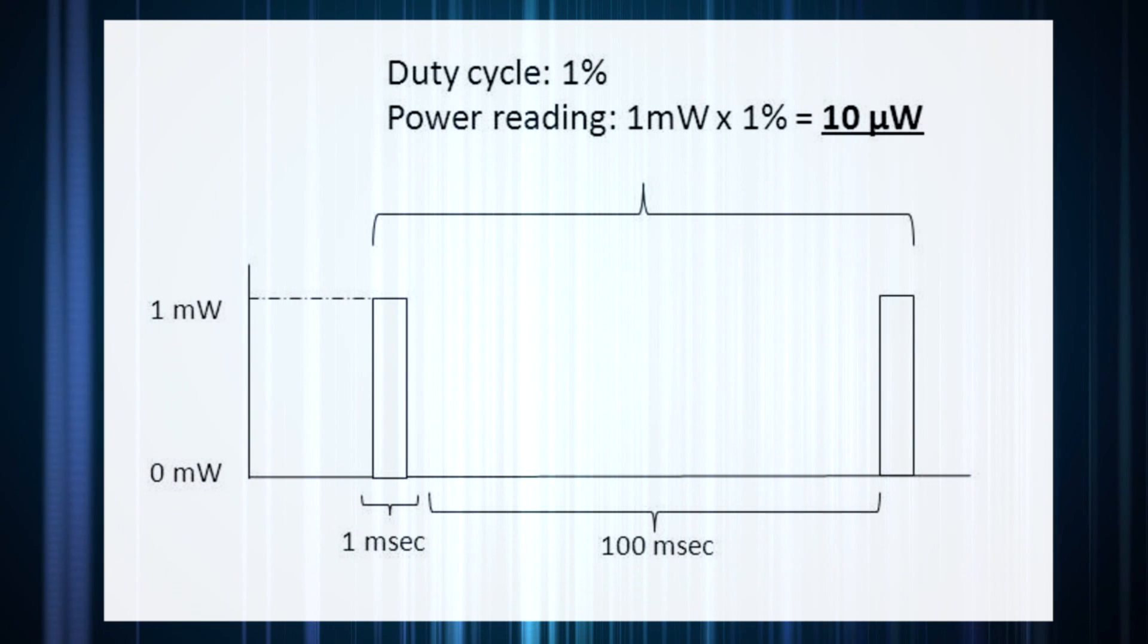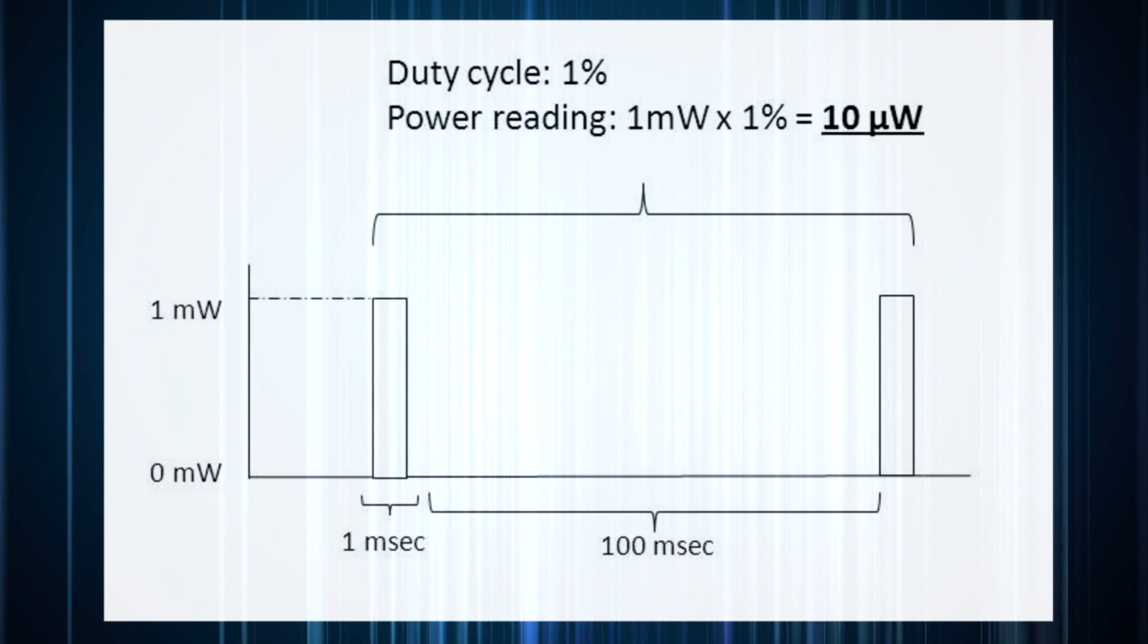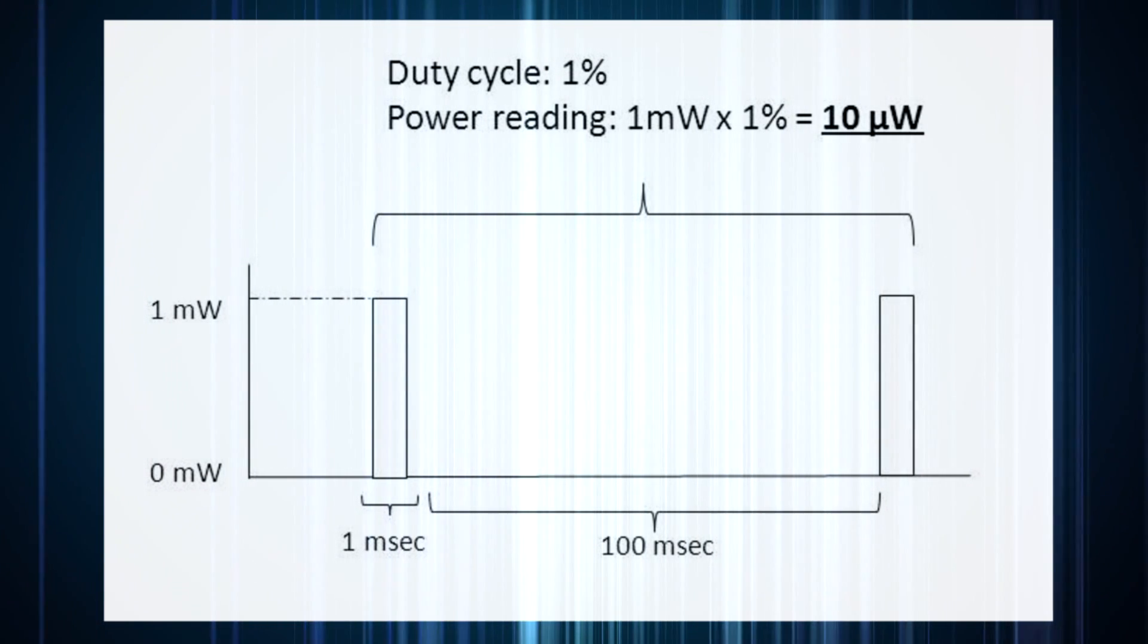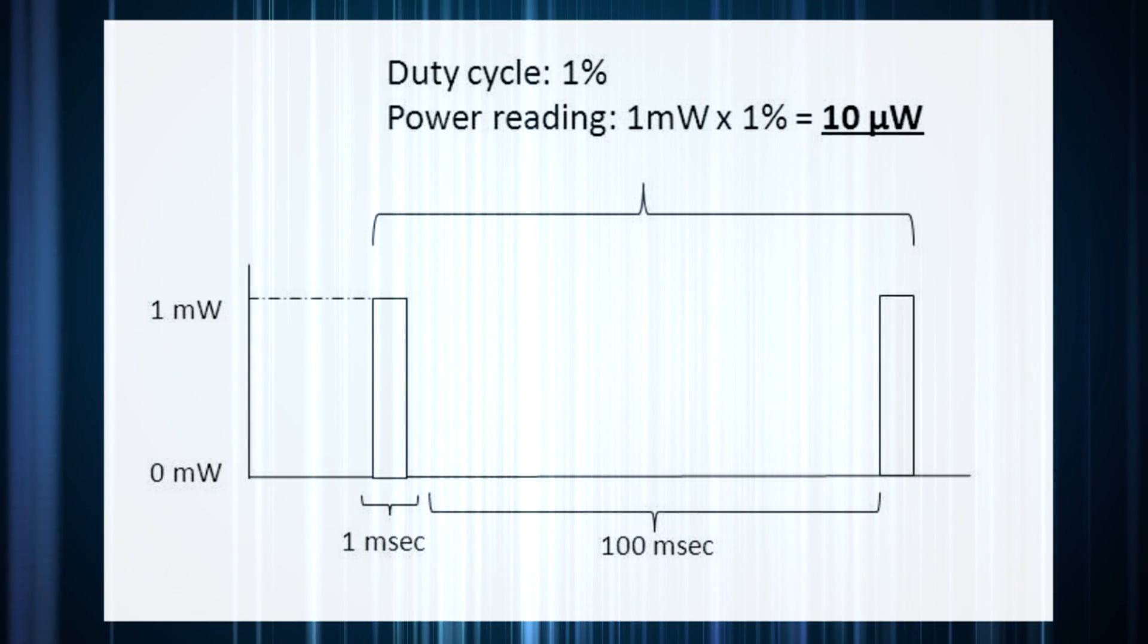Instead of reading the true power of the beam, 1mW, the sensor will read only 1% of that, or 10 microwatts.